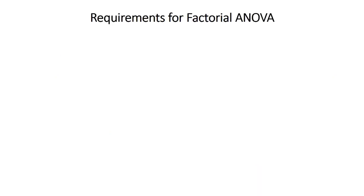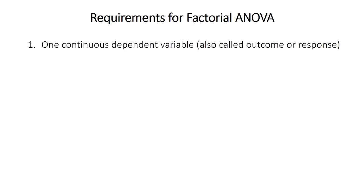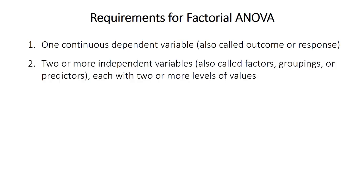What do you need for factorial ANOVA? First, you need one continuous dependent variable, also called the outcome or the response — you want to know if this variable differs significantly among all the groups. Second, you need two or more independent variables, also called factors, groupings, or predictors. These should be categorical and not continuous, and should have two or more levels each.